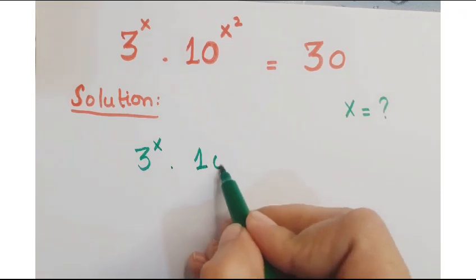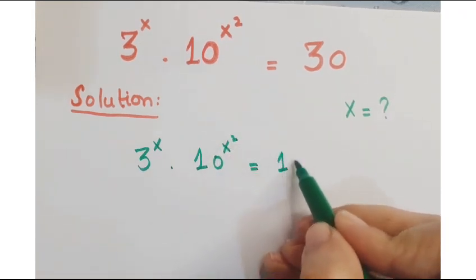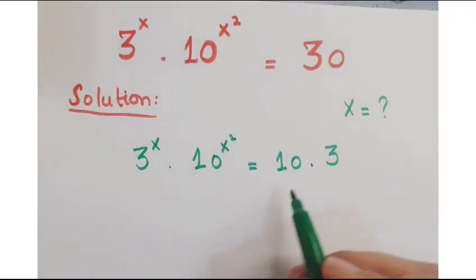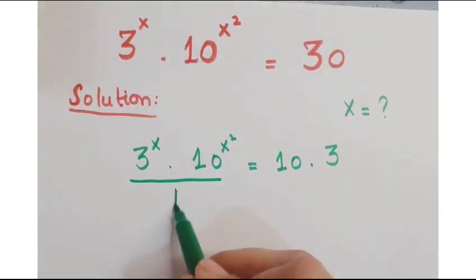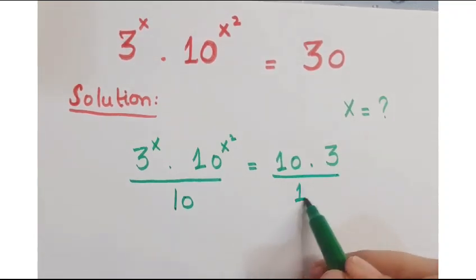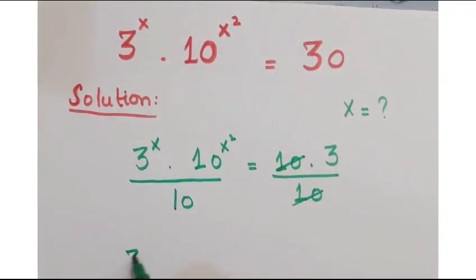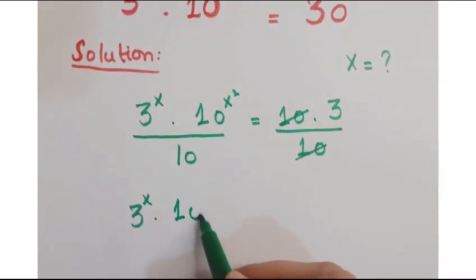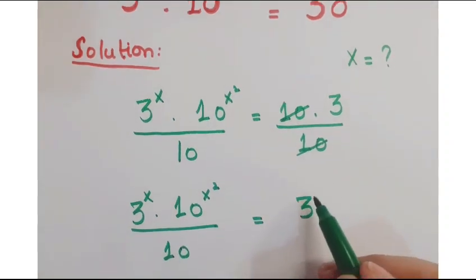First of all, we can write this 30 as 10 into 3. Now, in order to eliminate 10 from the left hand side and right hand side, divide both sides by 10. So you get 3 to the power x into 10 to the power x squared upon 10 is equals to 3.